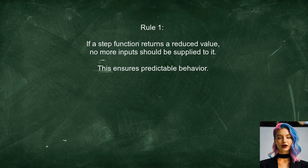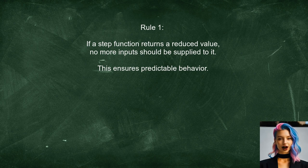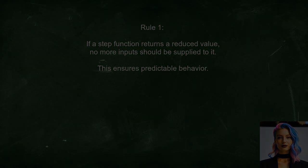What are these rules? The first rule states that if a step function returns a reduced value, no more inputs should be supplied to it. This ensures that the transducible process behaves predictably. Let's break this down further.